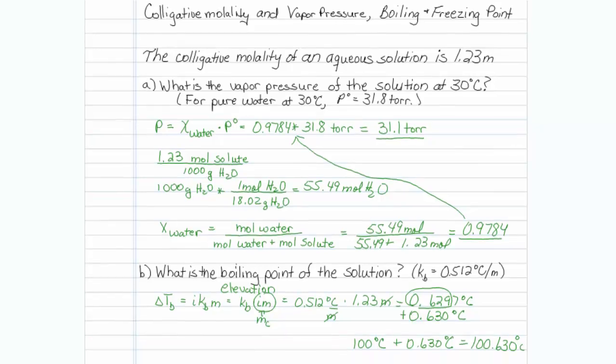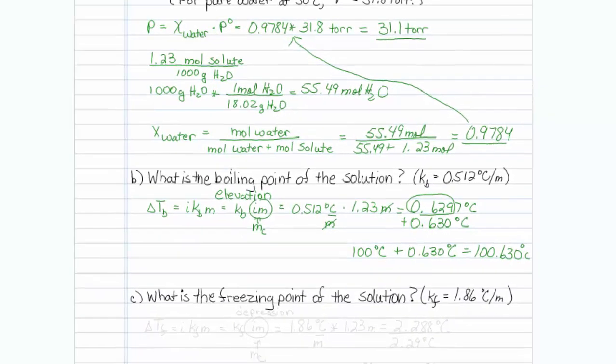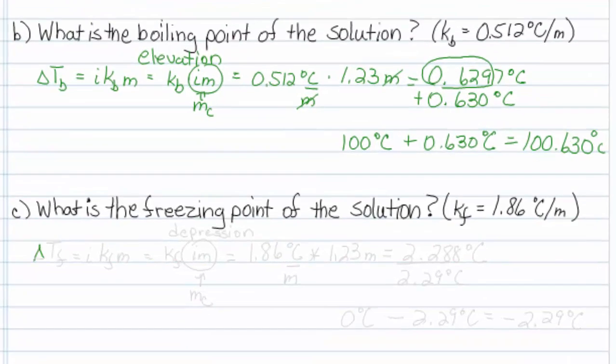Last part of this: what is the freezing point of the solution? It's the same formula, except it is freezing point depression, so it gets lower. Delta Tf is equal to i Kf molality. And again we'll just rearrange this, and i M, the van't Hoff factor times the molality, is actually what we're given, colligative molality.